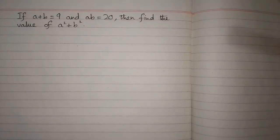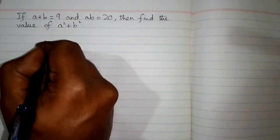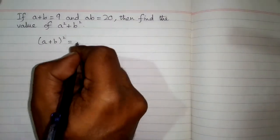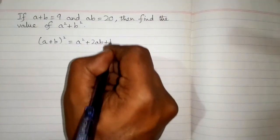If a plus b is equal to 9 and ab is equal to 20, then find the value of a² + b². We can solve this problem by using an algebraic identity which is (a + b)² = a² + 2ab + b².